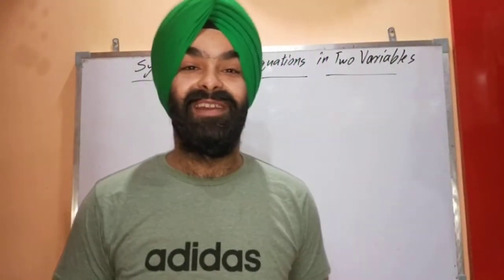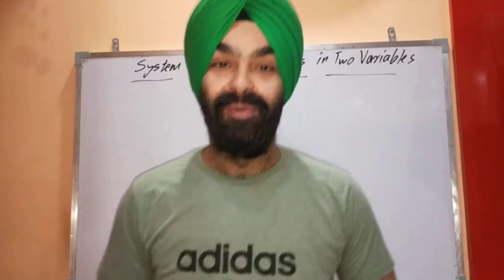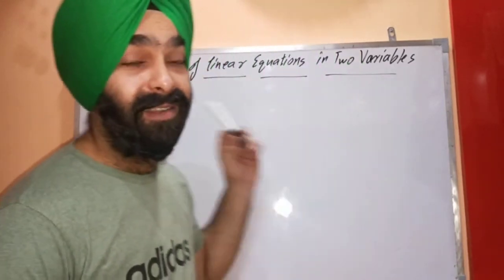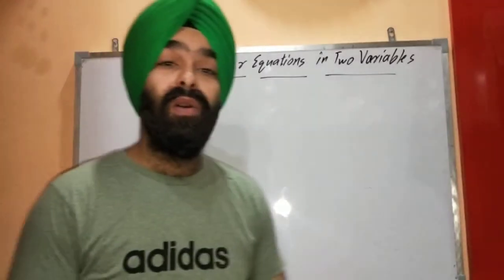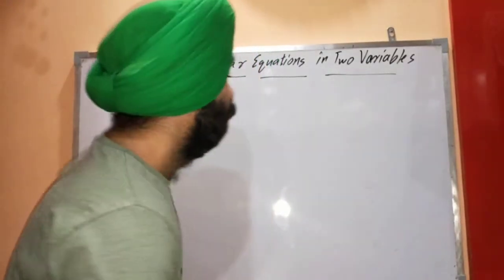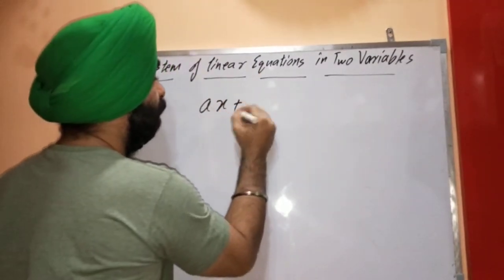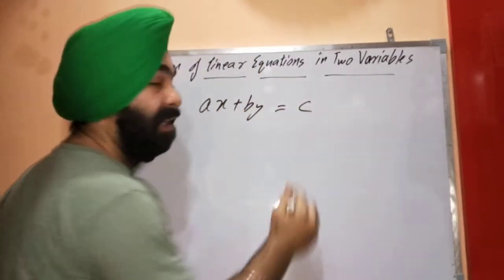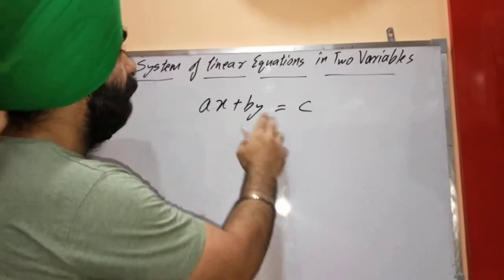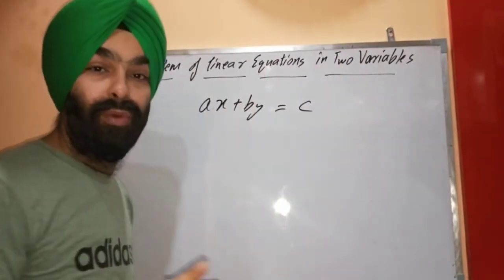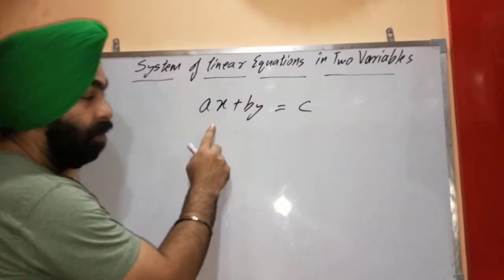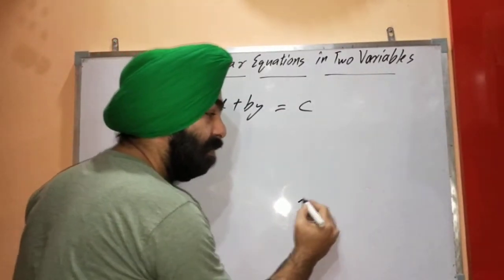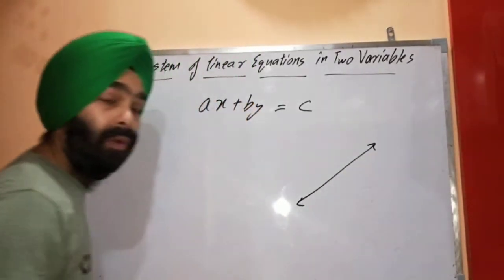Hello, dear students, welcome to the class of mathematics by Manindar Singh Sidhu. Today we are starting a new chapter of class 10th mathematics: system of linear equations in two variables. A linear equation has degree one, and here we are dealing with linear equations in two variables, so there will be two variables in total. Linear equations always form a straight line — that's why they are called linear equations.